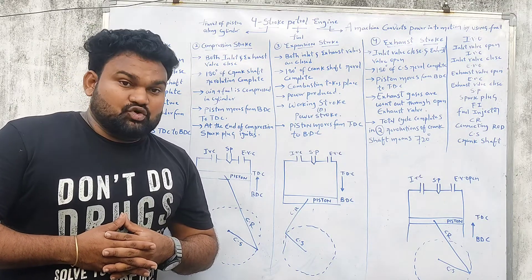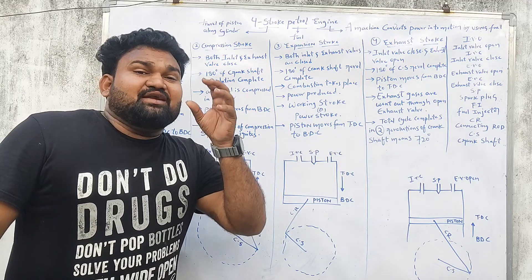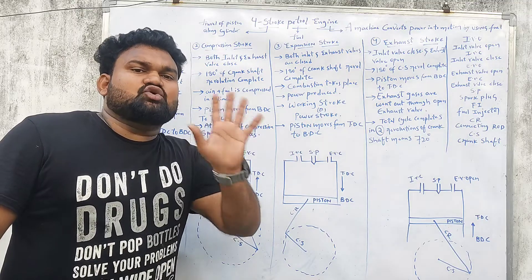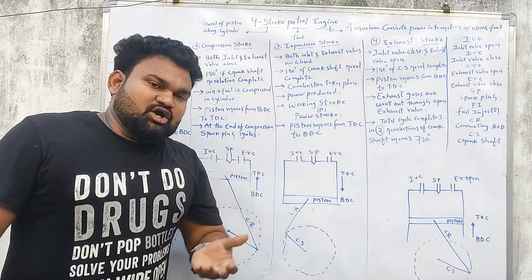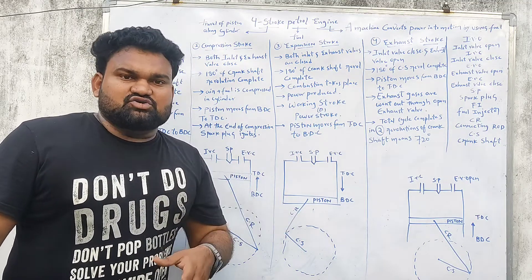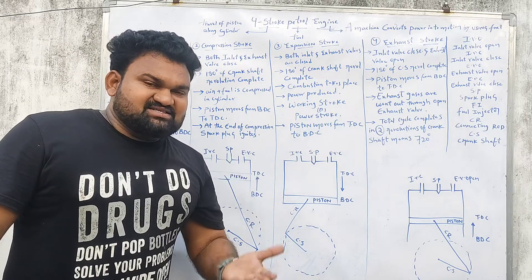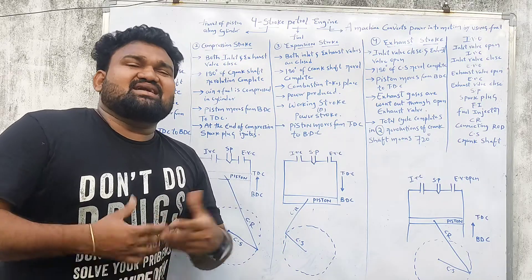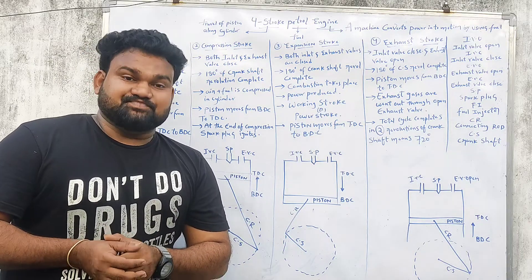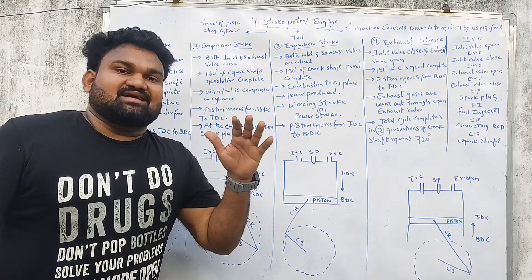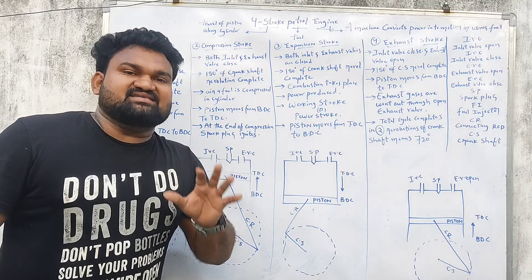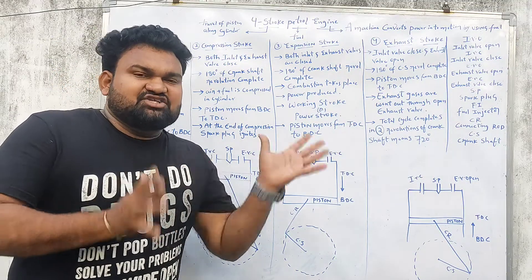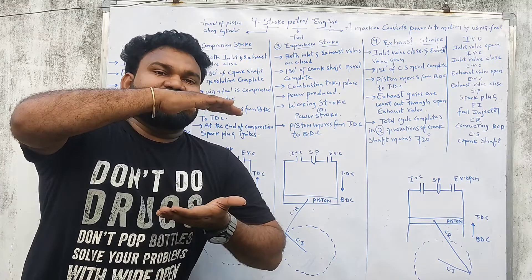What is the meaning of stroke? The complete movement of a piston in a cylinder is a stroke. If you have an upward stroke, then you have a downward stroke. So, if you have a TDC and BDC, then you have a stroke.